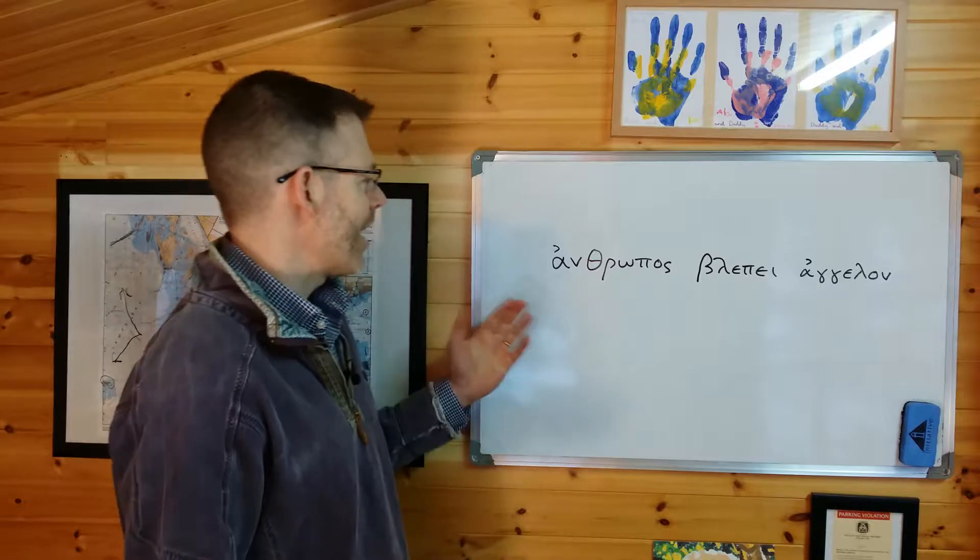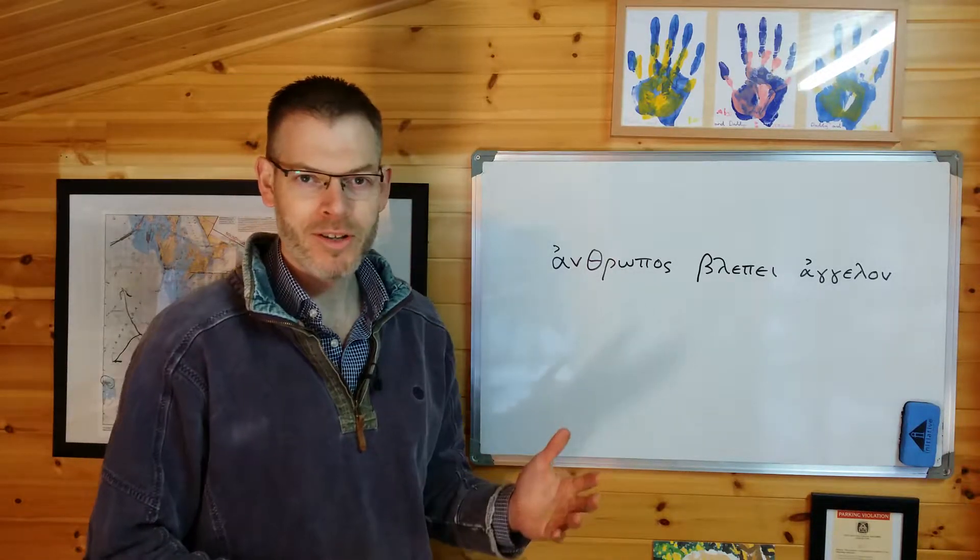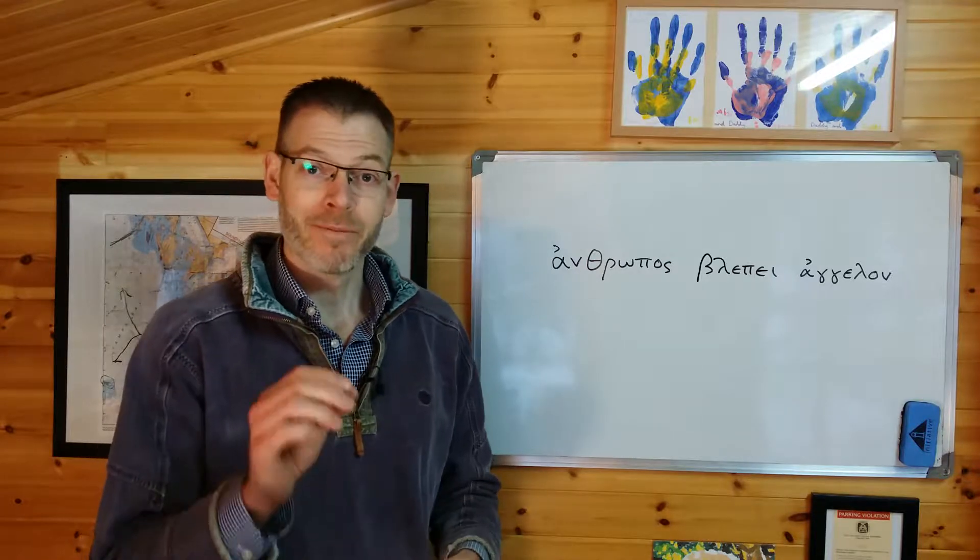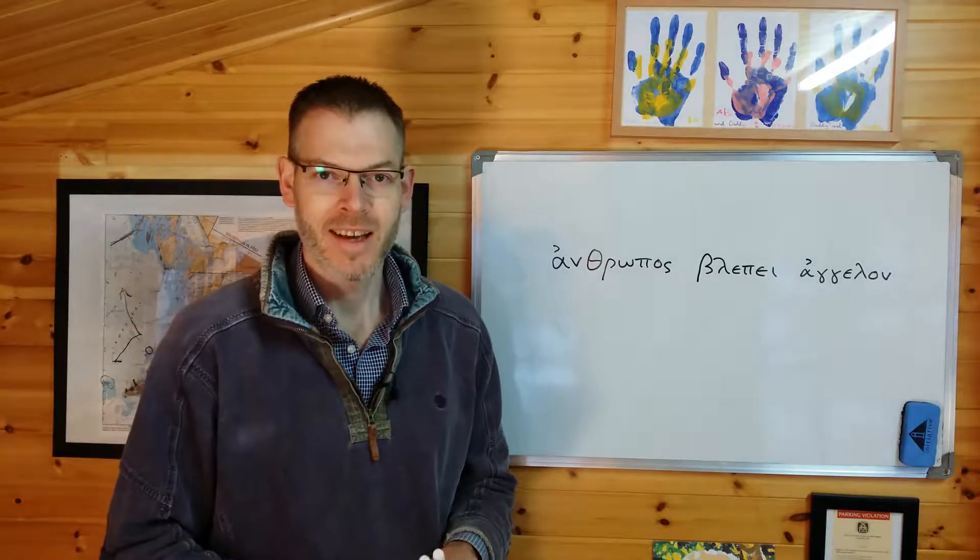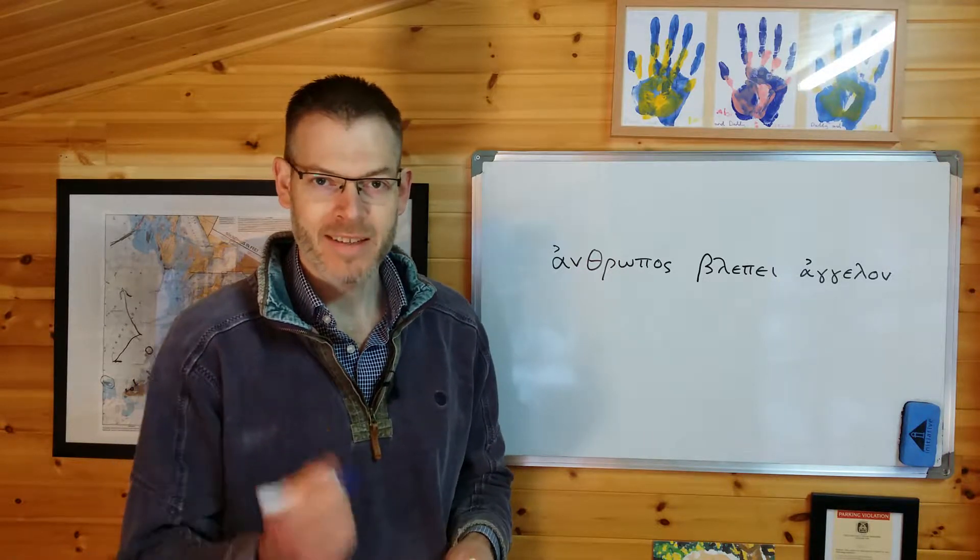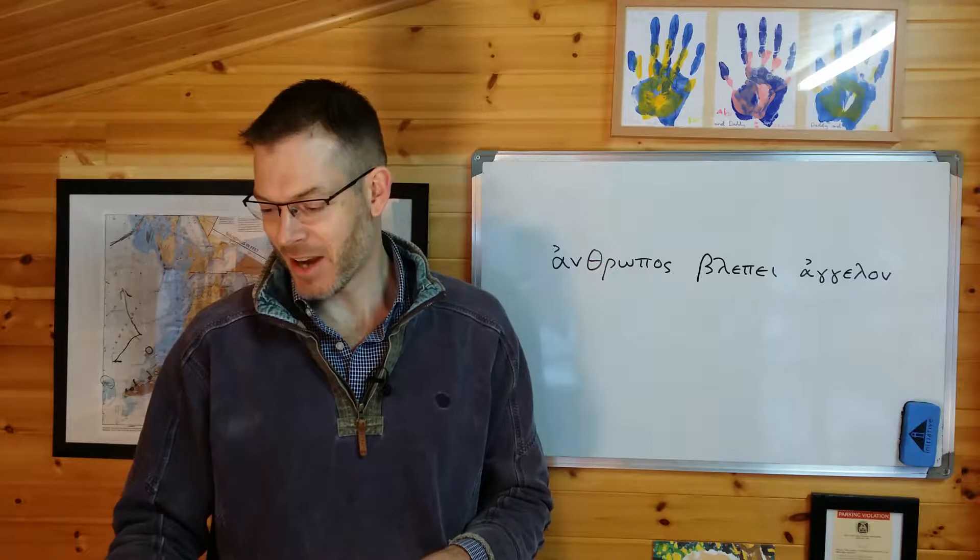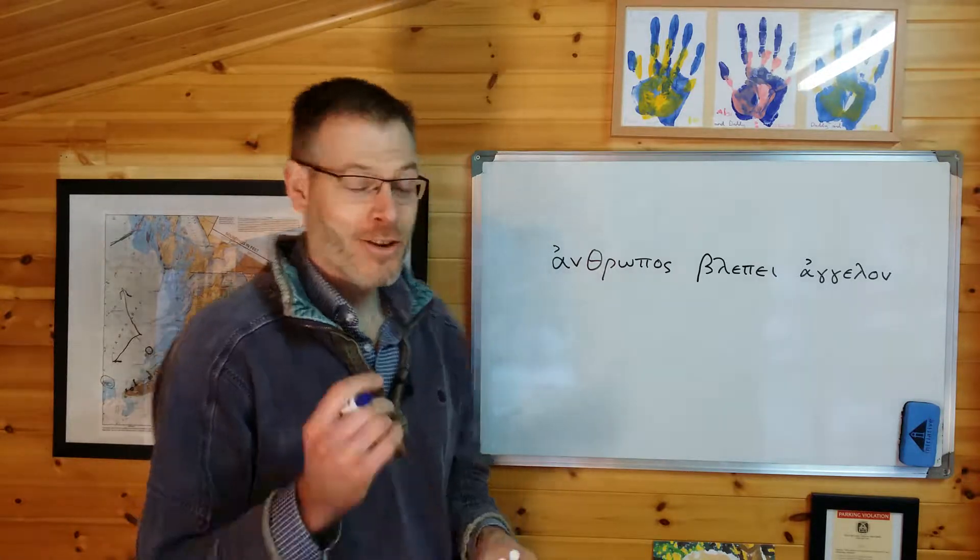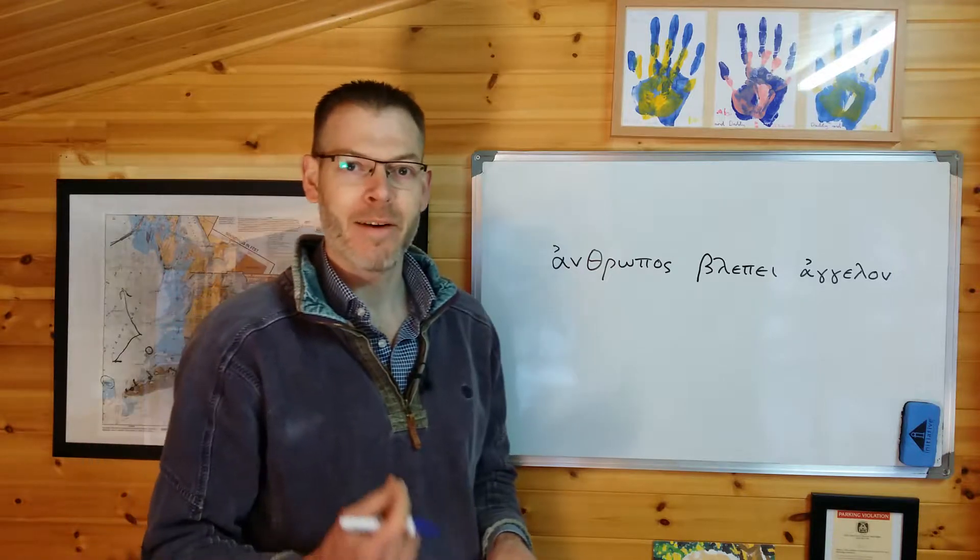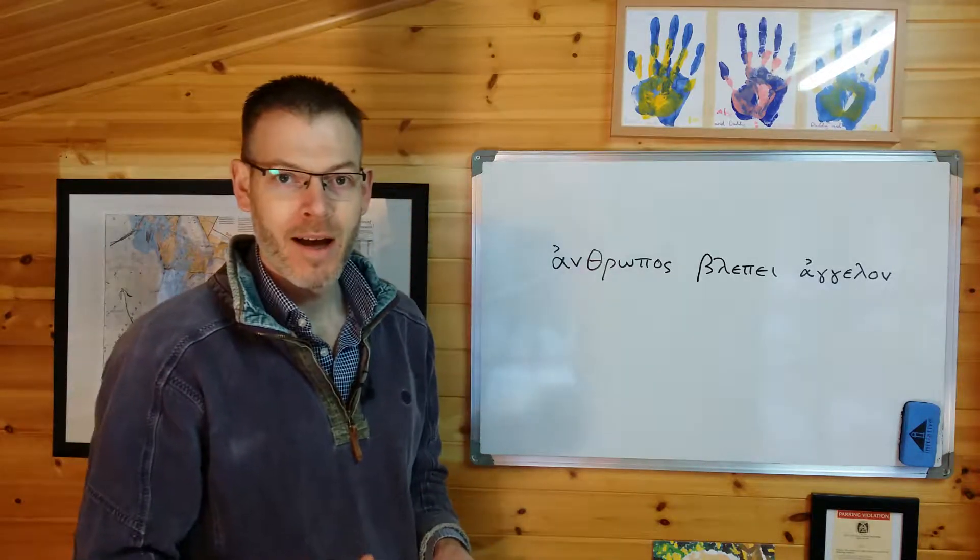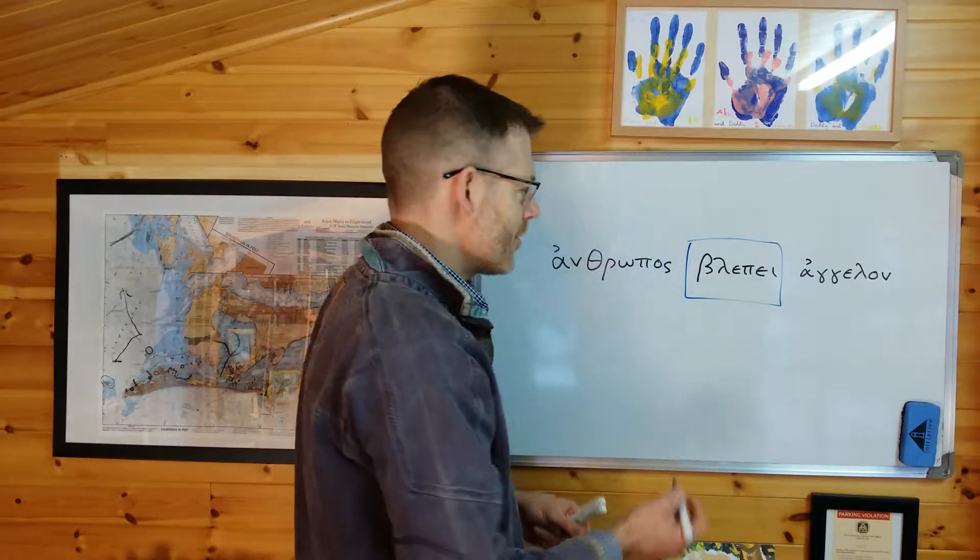First, take a look at this sentence. Anthropos blepe angelon. Now, the first thing to do always when you're presented with a sentence is to find the verb. And that's easy enough because you've been looking at the vocab towards the end of the chapter, and therefore you know that blepe is the third person singular form of the verb I see.